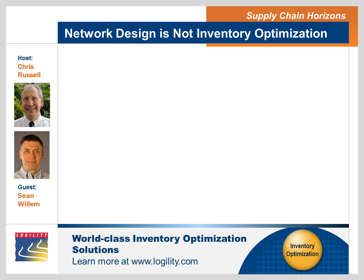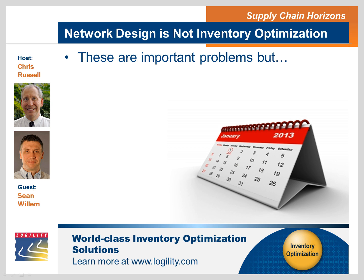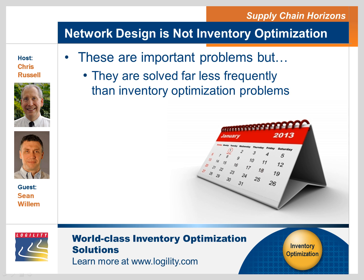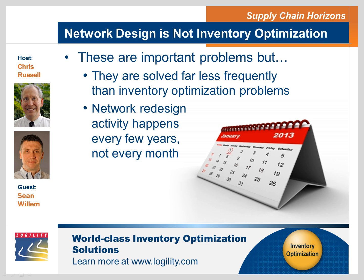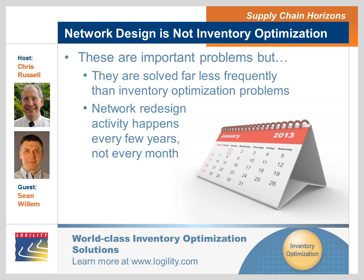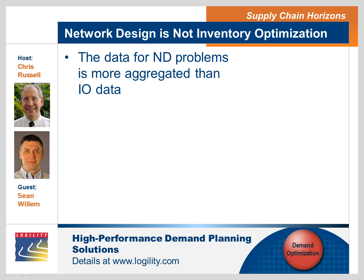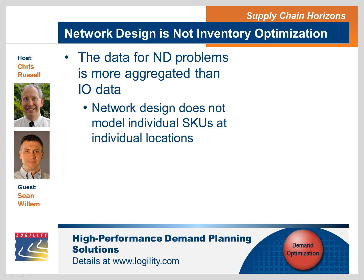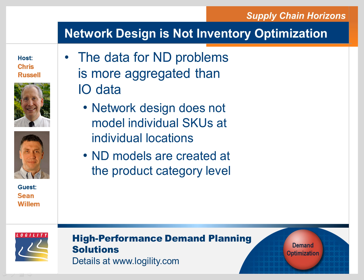Network design has existed for quite some time. It's also important to grasp that while these are important problems, they're solved far less frequently than inventory optimization problems. You're not going to optimize your entire distribution network every quarter, let alone every year — maybe every two to five years, depending on the clock speed of your industry. Network design data is also much more aggregated. We're not going to model things at the individual SKU level. Network design models aggregate up to the product category level.